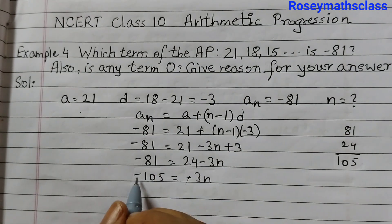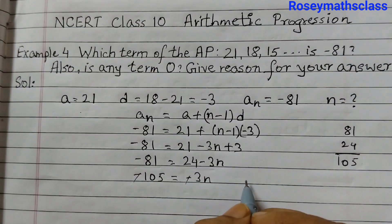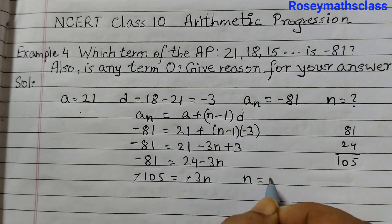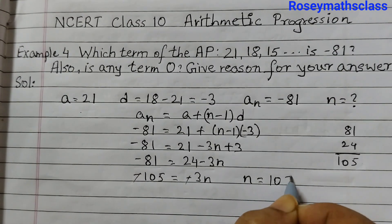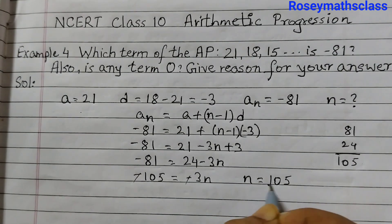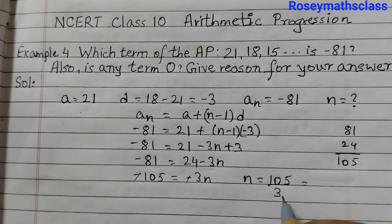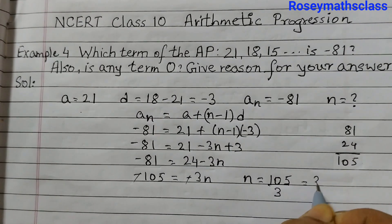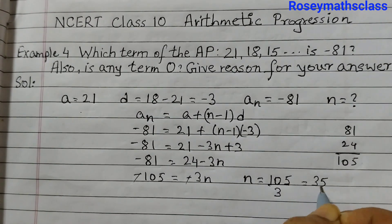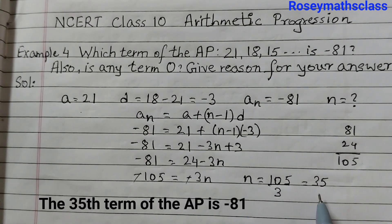Cancelling out minus and minus, N equals 105 divided by 3. 3 times 35 is 105, so N is equal to 35. Therefore, the 35th term of the AP is minus 81.